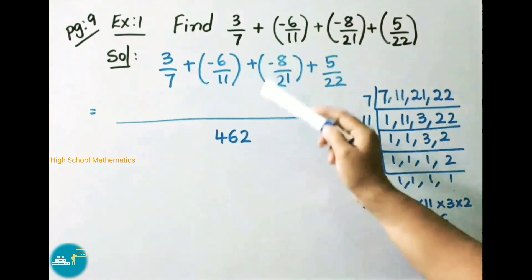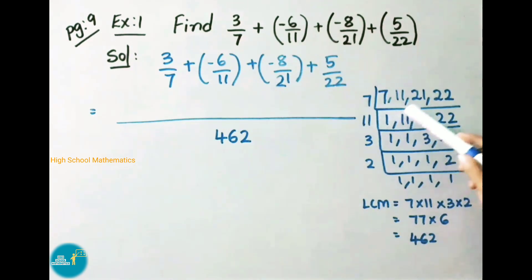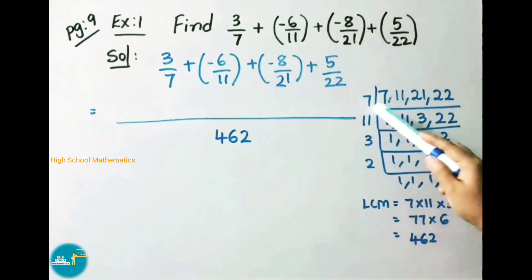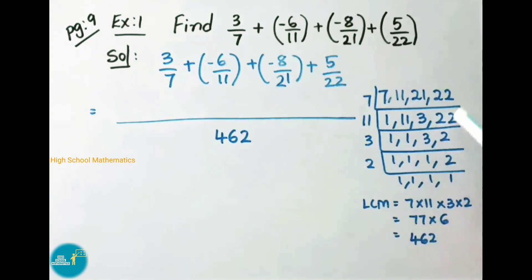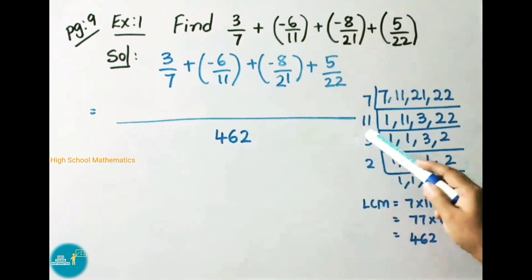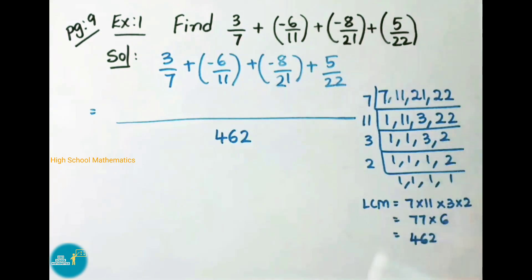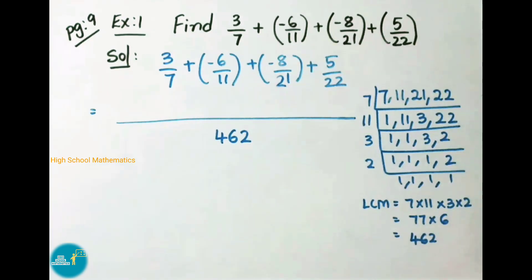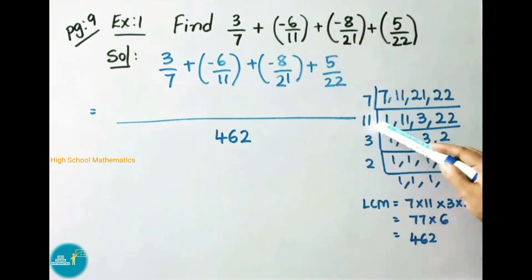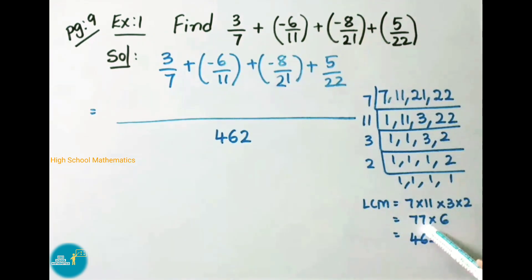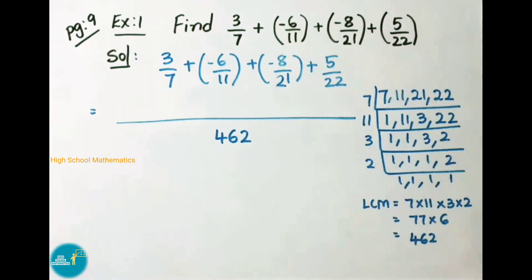Now we have to find the LCM for the given denominators 7, 11, 21, and 22. In the 7 times table: 7 ones are 7, 7 threes are 21. For 11 and 22: 11 ones are 11, 11 twos are 22. We have written 3 as it is. Then 3 ones are 3, and 2 we have written as it is. In the 2 times table: 2 ones are 2. So the LCM is 7 into 11 into 3 into 2. That is 77 into 6, which equals 462. Therefore the LCM of the given denominators is 462.